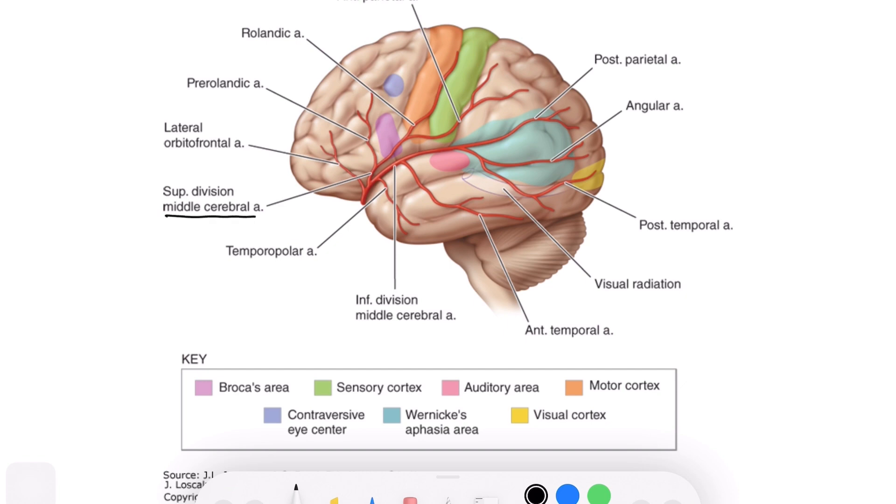MCA has two branches: penetrating and cortical. Occlusion of any one of these branches doesn't cause symptoms because of collateral supply. The green area you see is the sensory area and the reddish area is the motor area. You can see that the MCA supplies these areas, and thus occlusion will lead to contralateral hemiplegia and hemianesthesia.